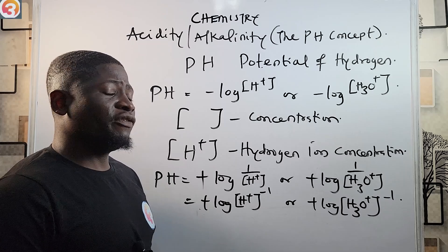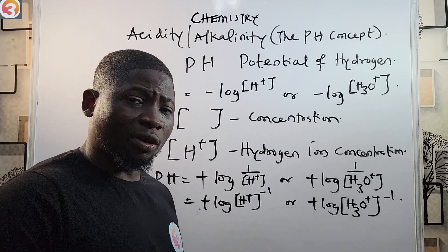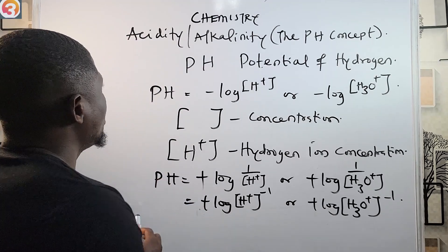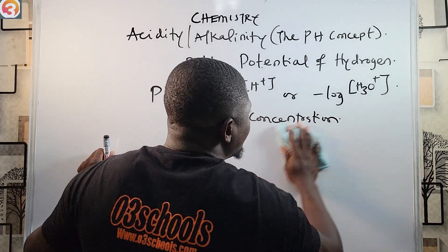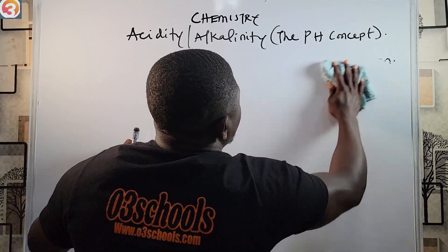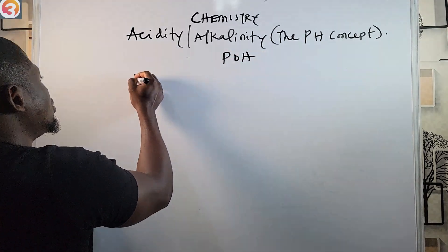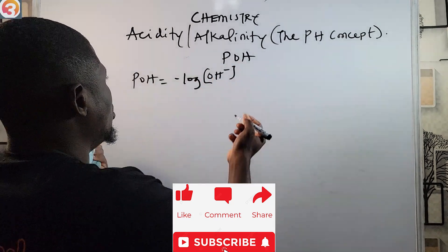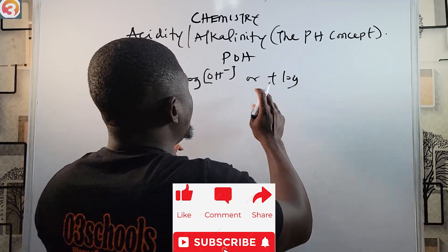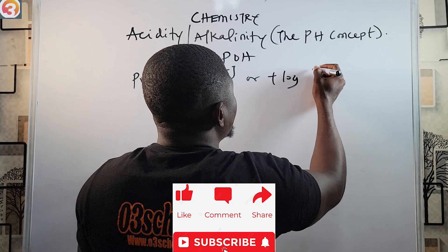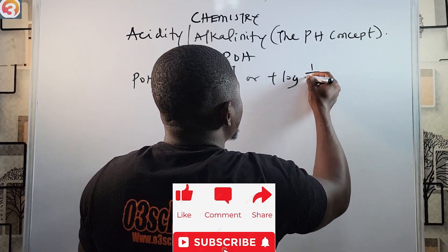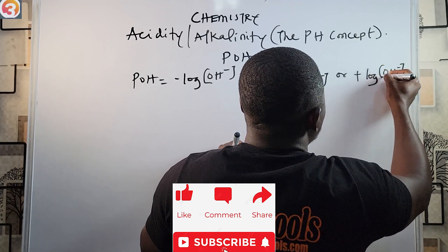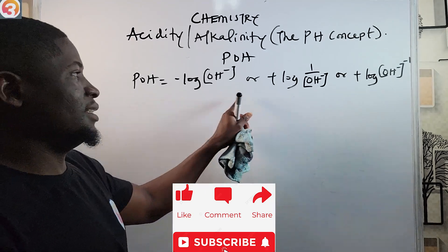There is a related term called pOH. Acids have pH; bases have pOH. pOH equals the negative logarithm of the hydroxide ion concentration. It can also be written as positive logarithm of one over the hydroxide ion concentration, or positive logarithm of the OH⁻ ion concentration raised to the power minus one.